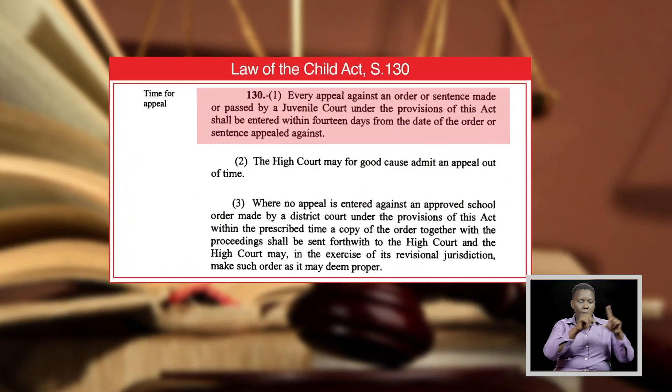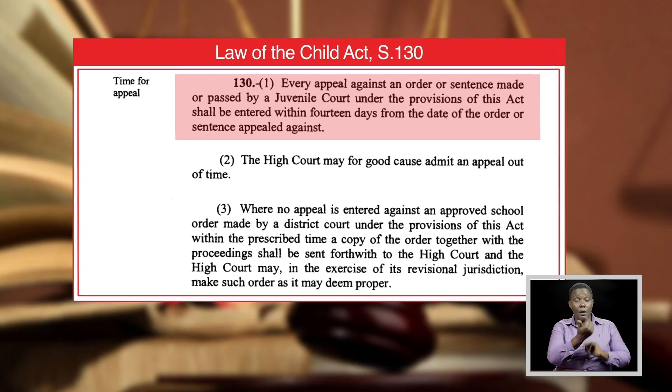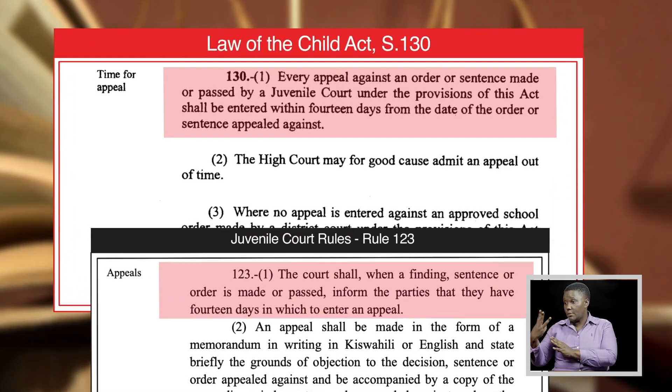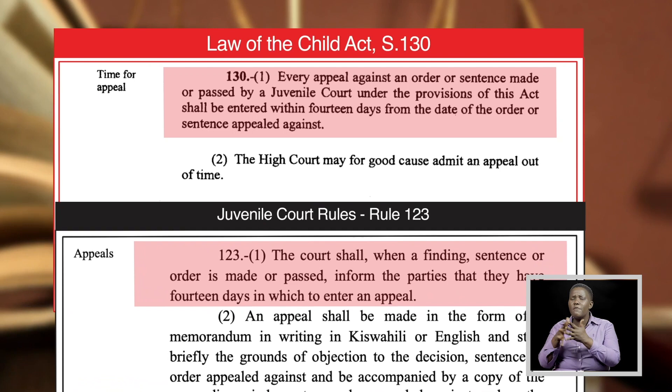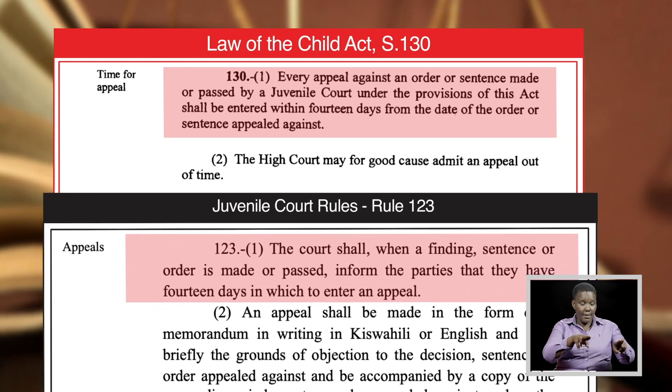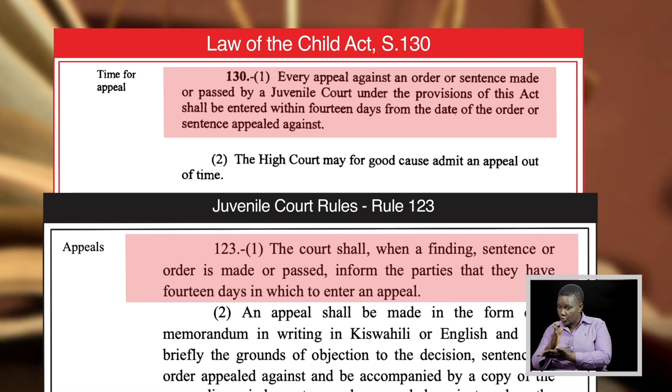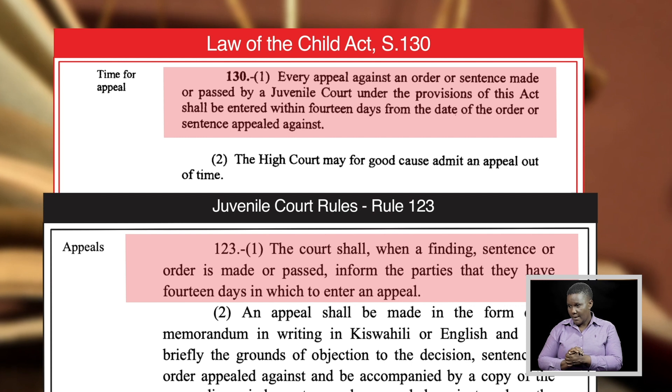Upon making a finding or determination in matters relating to juveniles, the court is duty-bound to inform the parties of their right to appeal. Section 130, Subsection 1 of the Law of the Child Act and Rule 123 of the Juvenile Court Rules stipulate that the court shall, when a finding, sentence, or order is made or passed, inform the parties that they have 14 days in which to enter their appeal.